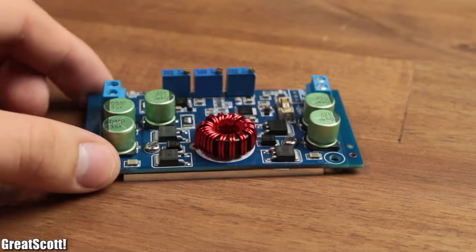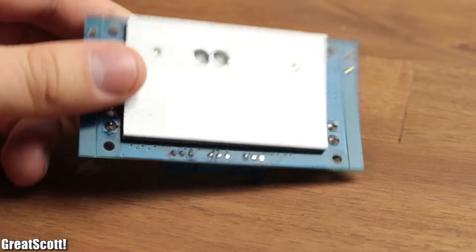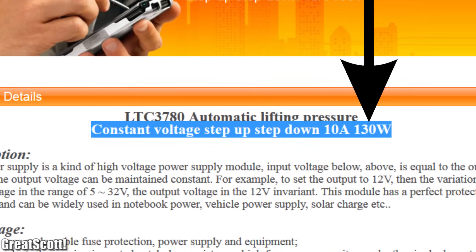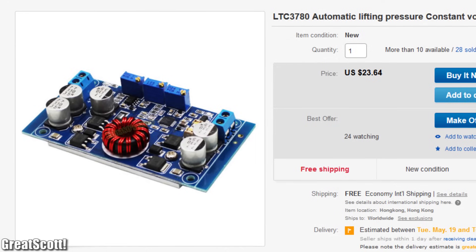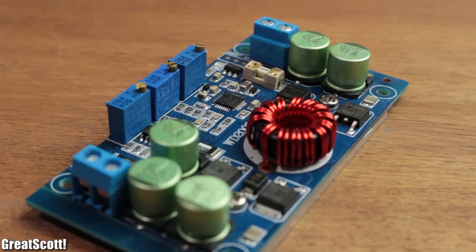The star of this supply is this LTC3780 Step Up Step Down Converter. It combines an efficient and really powerful buck and boost converter for the price of $21. Let's test this thing before we put it in an enclosure.